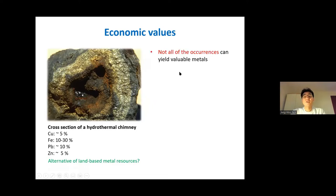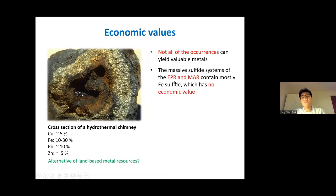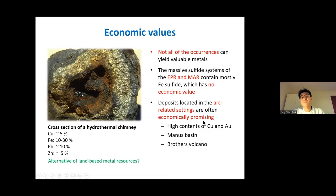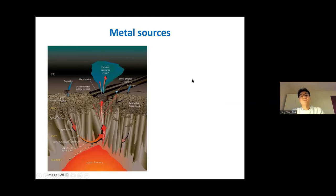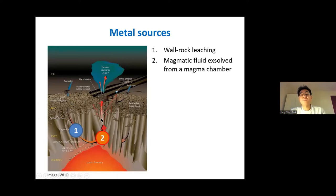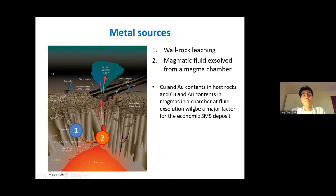However, not all occurrences can yield valuable metals. Those in EPR and MOR settings contain mostly iron sulfide and have no economic value at all. The deposits located in arc-related settings are often economically very promising, with high concentrations of copper and gold. Those in the Manus Basin and the Brothers Volcano on the Kermadec Arc are representative examples. There are two sources for metals: first, metals are provided from the wall rocks by leaching during water-rock interaction; second, they can also be supplied from magmatic fluid exhaled from a magma chamber underneath.